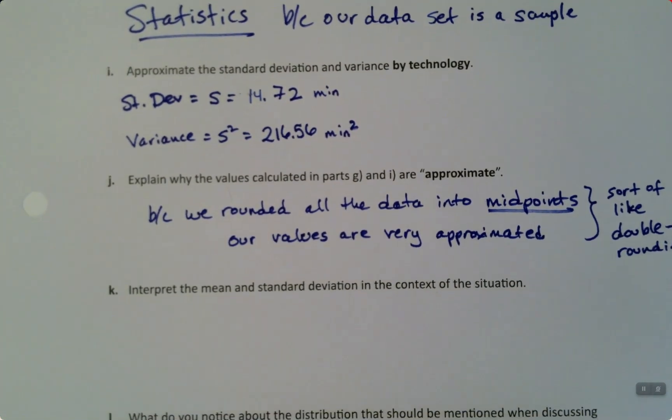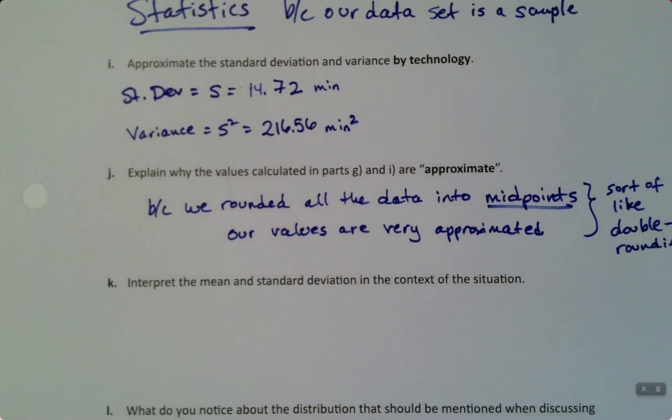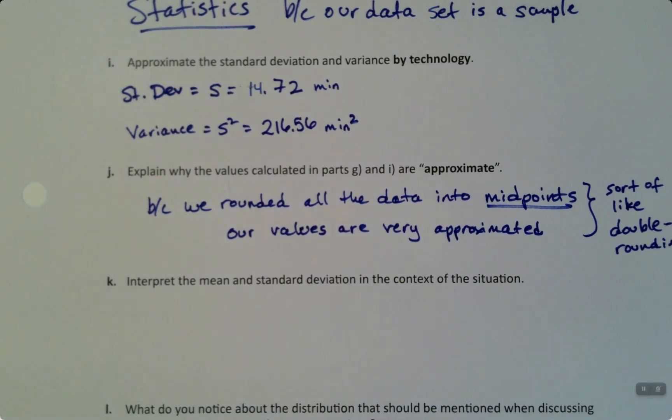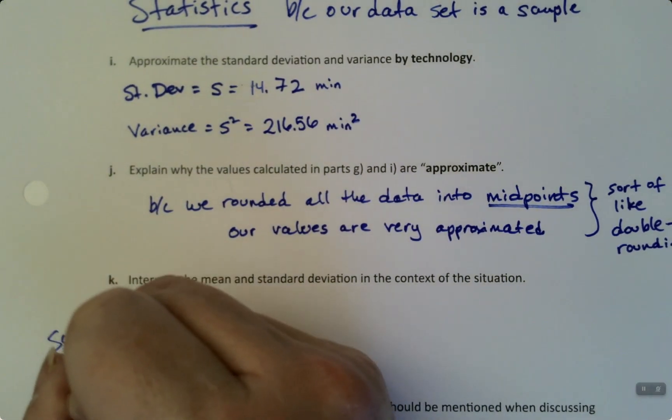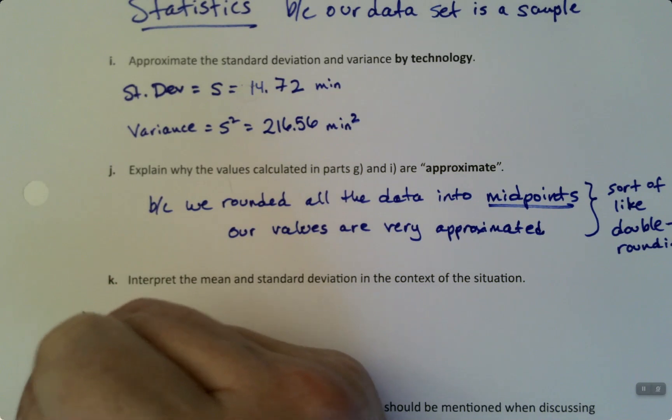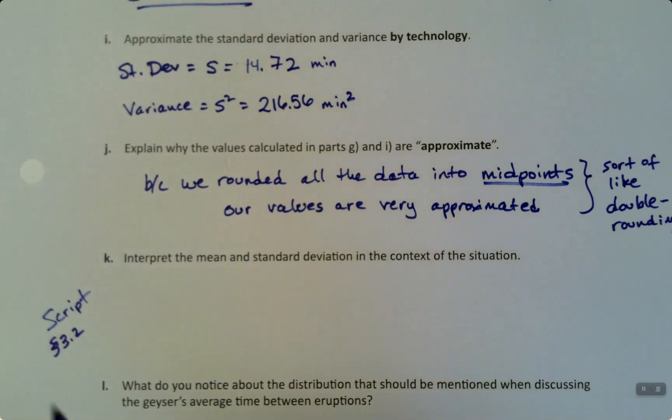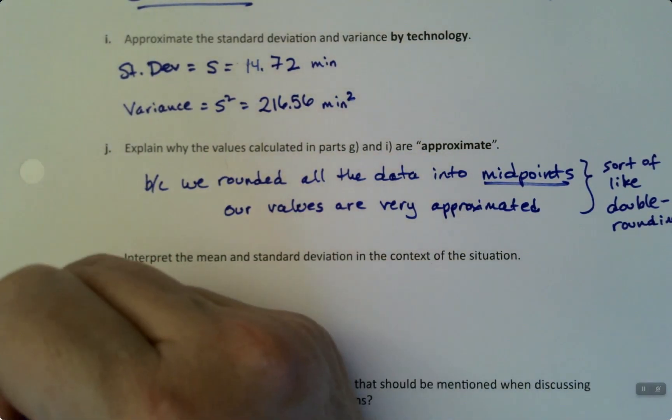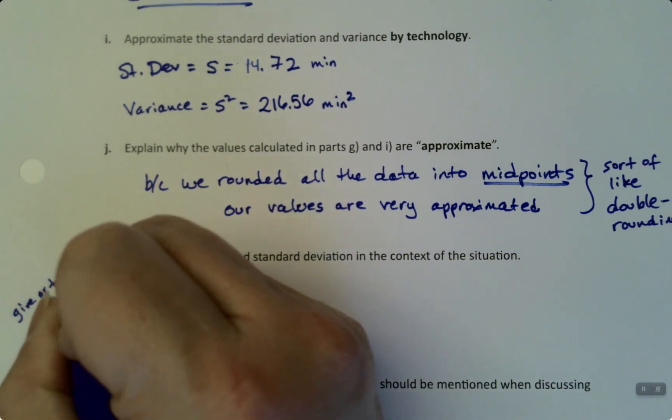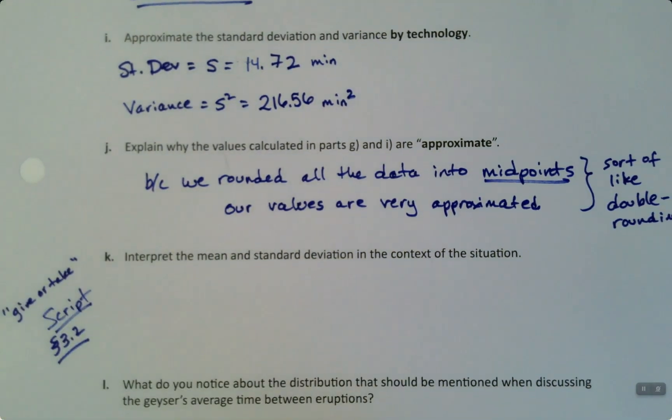Next, interpret the mean and standard deviation in the context of the situation. Well, that's a script that we learned in section 3.2, so you have to go back there and grab it. But it's the give or take script. I'll just put it that way, give or take script that we learned in section 3.2.